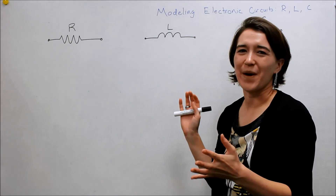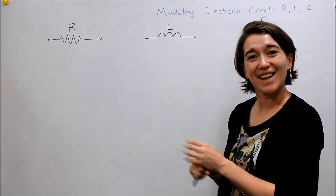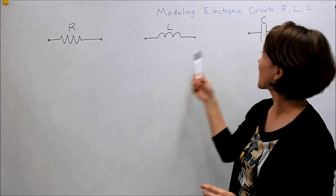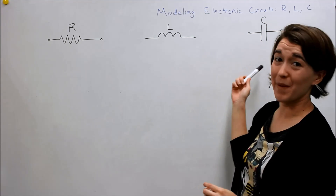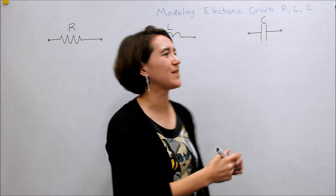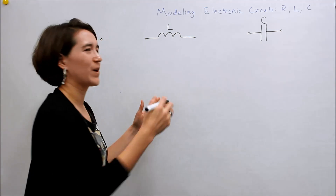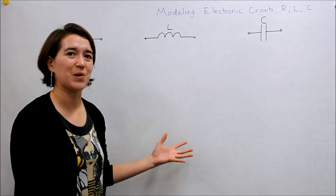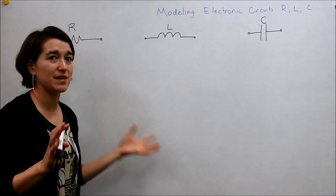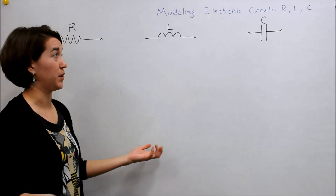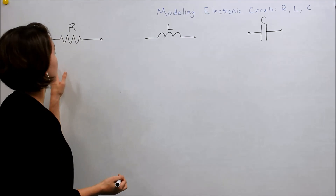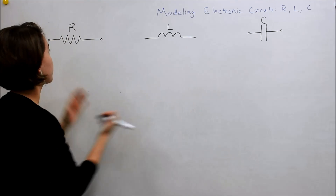Next we'll be talking about modeling electronic components, specifically a resistor, an inductor, and a capacitor. To do this, we'll need to look at the governing equations. First let's think about just the time domain, what you're probably all familiar with. How do we write the equations for these components?